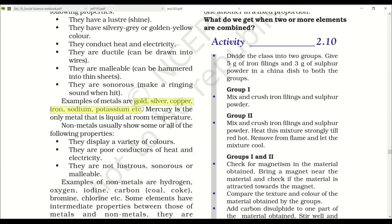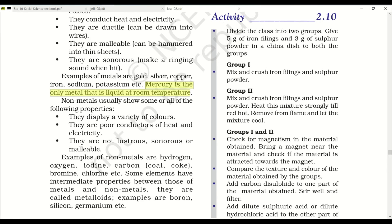iron, sodium, potassium, etc. Mercury is the only metal that is liquid at room temperature. Non-metals usually show some or all of the following properties: they display a variety of colors. They are poor conductors of heat and electricity. Metals were good conductors of heat and electricity. Non-metals are poor conductors of heat and electricity. They are not lustrous, sonorous or malleable. That means they have the opposite properties of metals.